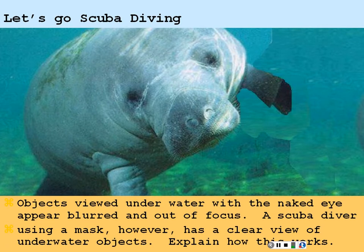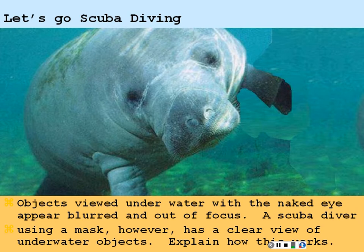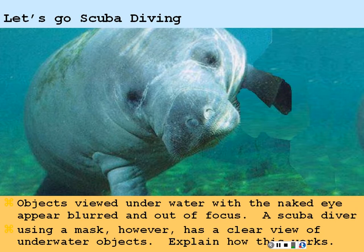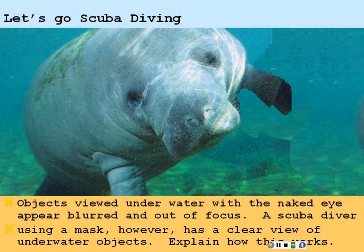Say you're swimming underwater without a mask. Your eyes are designed to deal with an air environment, so the optics of your eyes are designed for an index of refraction of one in the general environment going into the fluid of your eyes. But if you're swimming in water, the air has been replaced by an index of refraction of water, and things will appear blurred. If you wear a mask, then you have a layer of air right before your eyes, and hence the optics of your eyes work as they should.